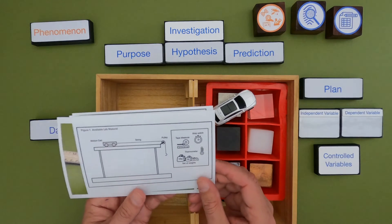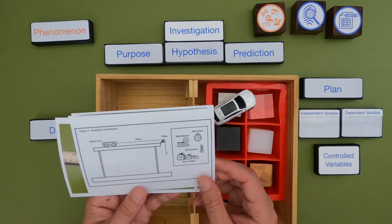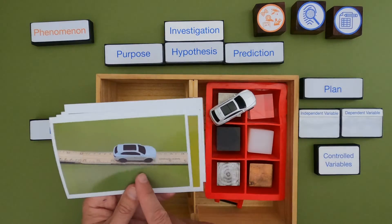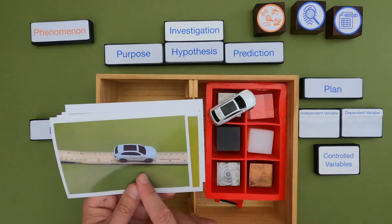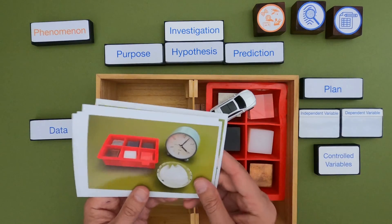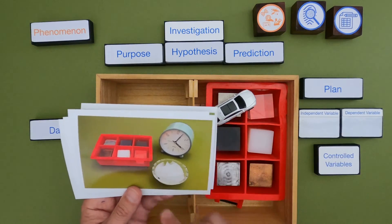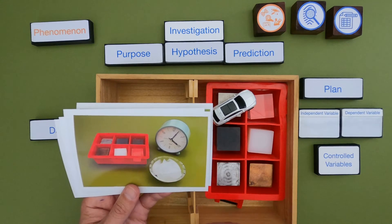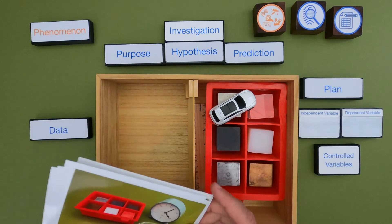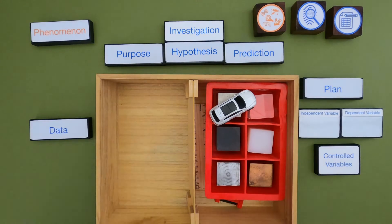I'm going to start by showing you how to create an investigation around a phenomena of a simple car on a ramp, and then you'll have a chance to do the same with some materials and the rate of melting of ice. So let me clean this up and then we'll get started.